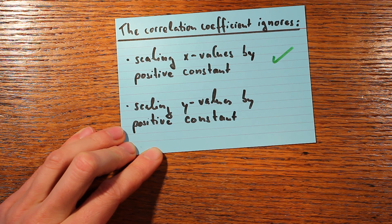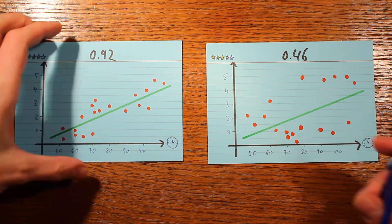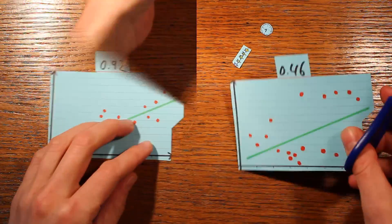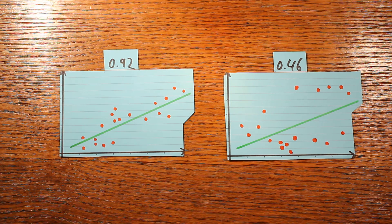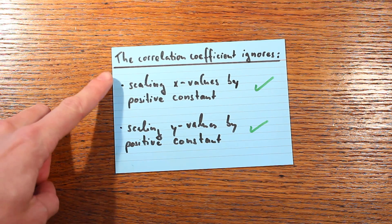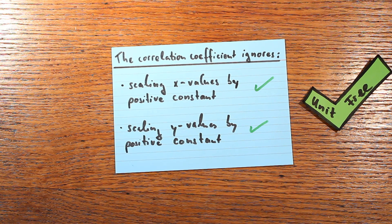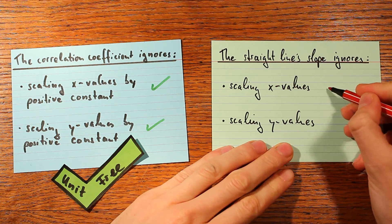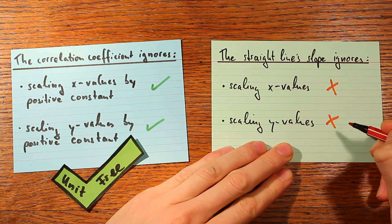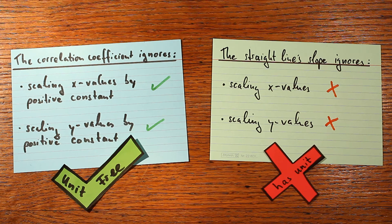If you multiply by a negative constant, only the sign of the correlation coefficient changes, not its magnitude. So the correlation coefficient doesn't care about a change of unit on the y-axis either. This is more dramatic than it might appear: it means you can completely strip the units from a scatter plot and still determine the correlation coefficient. The plot with the tighter fit will always have the larger correlation coefficient, regardless of units. This is a major difference from the slope — the slope is totally dependent on units, whereas the correlation coefficient is completely independent of them.